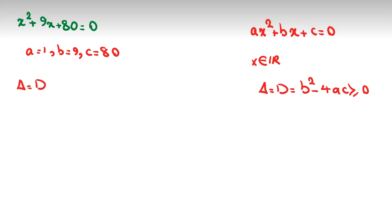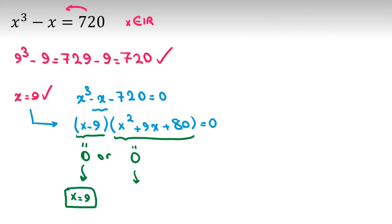Delta or discriminant, we call it, b squared minus 4ac equal to 9 squared minus 4 times 1 times 80. 9 squared is 81. 4 times 80 is negative 320. Obviously, less than 0. That's a contradiction. And we can say, the only answer for this problem is x equal to 9.